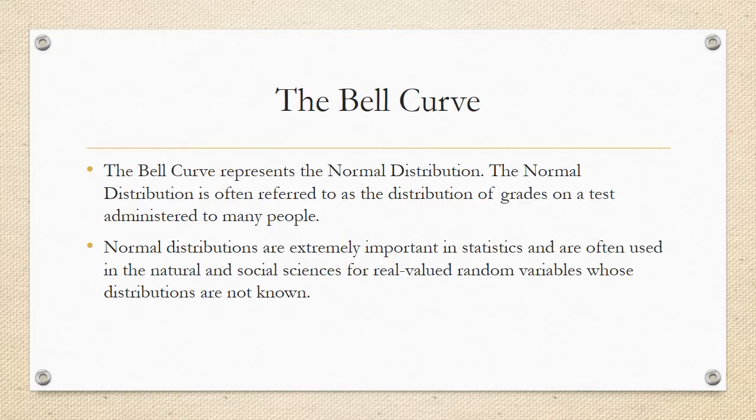Okay, so we've got to get down to basics. And it can't get any more basic than understanding the bell curve. The bell curve represents the normal distribution. The normal distribution is often referred to as the distribution of grades on a test administered to many people. Normal distributions are extremely important in statistics and are often used in sciences such as psychology for real valued random variables whose distributions are not necessarily known.